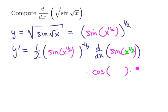So the chain rule again. The derivative of sine of blank is cosine of blank times the derivative of blank. The blank is x to the 1 half. The derivative of that is 1 half x to the minus 1 half.